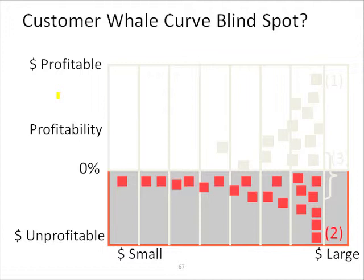What we do know is that at the front end of the whale — the head of the whale — the number one customer can only be there because they are huge, very large. You see down here the huge dollars we're talking about: huge margin dollars, and cost to serve is big, but noticeably less. The difference, of course, is profit.